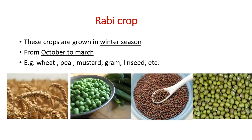The next crop is Rabi crop. These crops are grown in the winter season, from October to March. Examples of Rabi crops are wheat, pea, mustard, gram, and linseed.